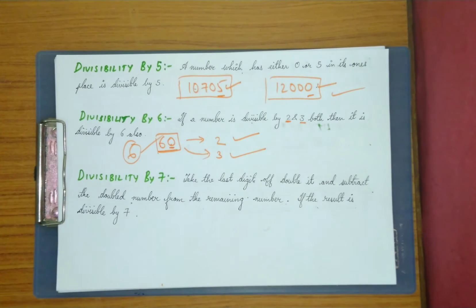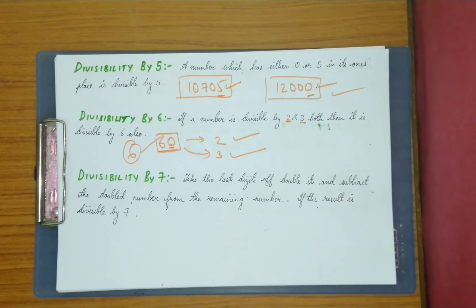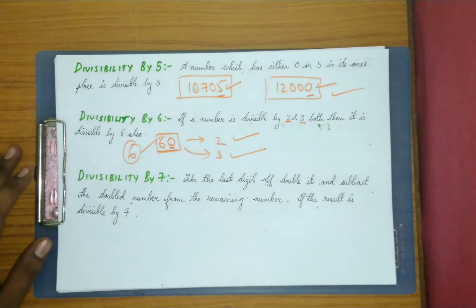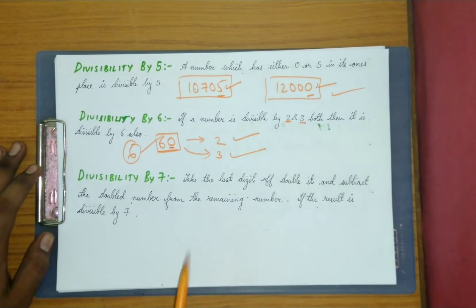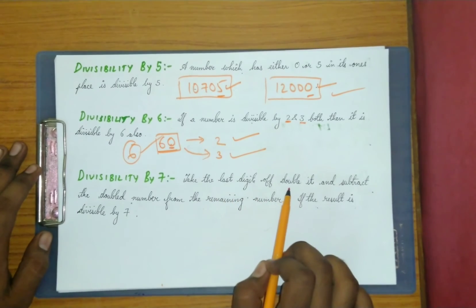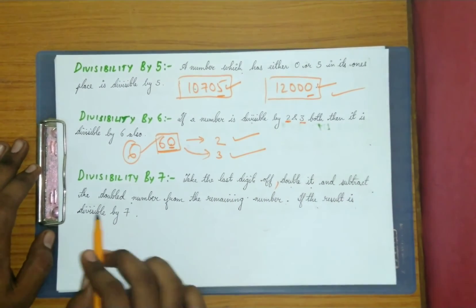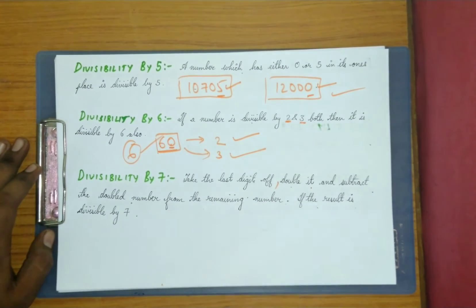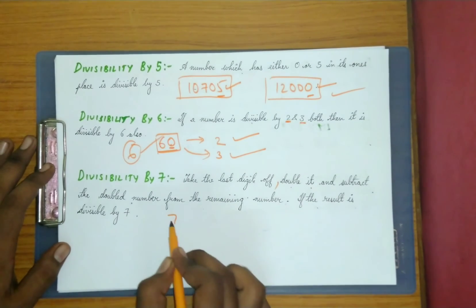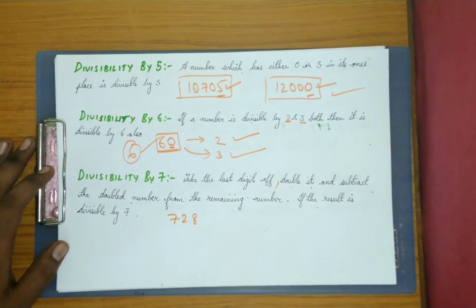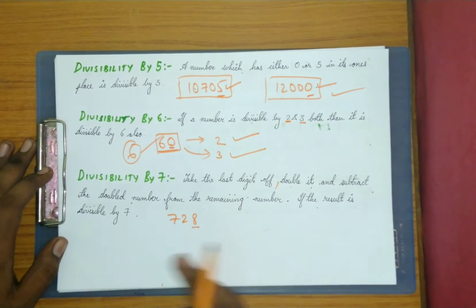Now let us go to the divisibility test of 7. In the 6th class syllabus it is not given, but you can study it for learning purposes. Take the last digit, double it, and subtract the doubled number from the remaining number.